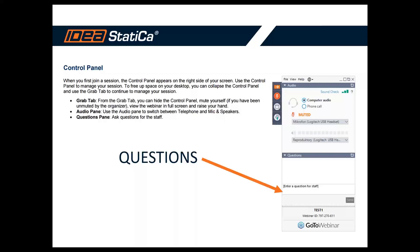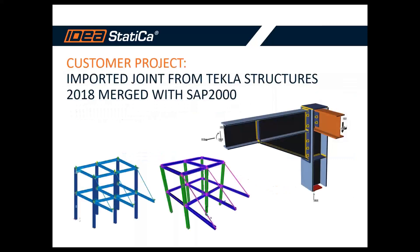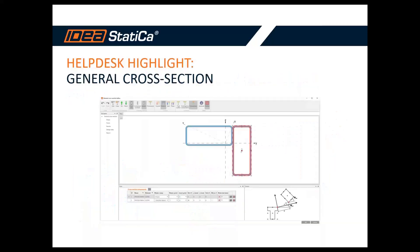So what will you see today? The joint import from Tekla Structures merged with a SAP 2000 model, as I mentioned. David will also present different tips and tricks on how to work with Code Check Manager. At the end, we will have a short look at general cross-section creation, based on a problematic example from our help desk where the user did not know how to work with it.